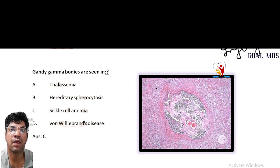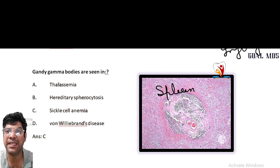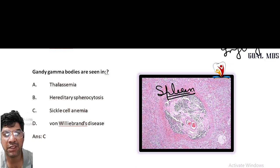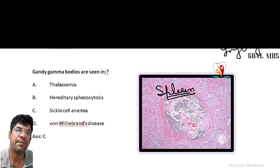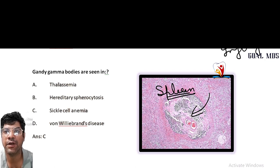Gamma-Gandy bodies are seen in sickle cell anemia. These are small calcified nodules that can be seen in the spleen and are associated with chronic congestion. These nodules are seen in individuals with sickle cell anemia due to the congestion of sickled RBCs in the spleen. The spleen plays a significant role in filtering damaged or abnormal red blood cells, and this process leads to formation of these calcified nodules.